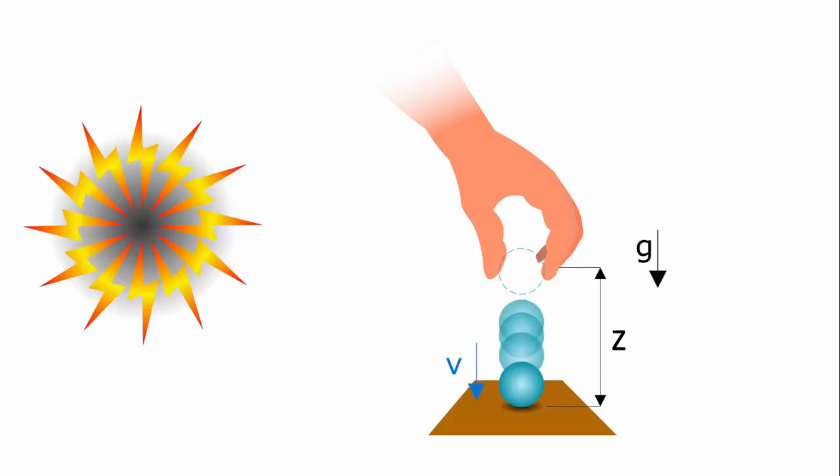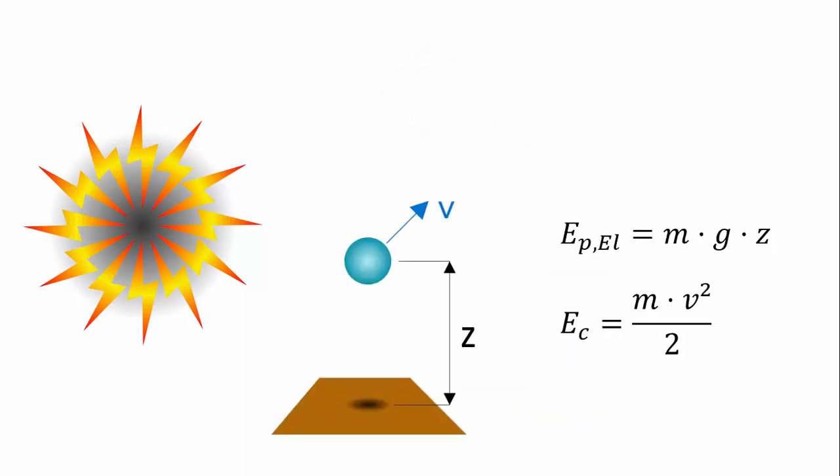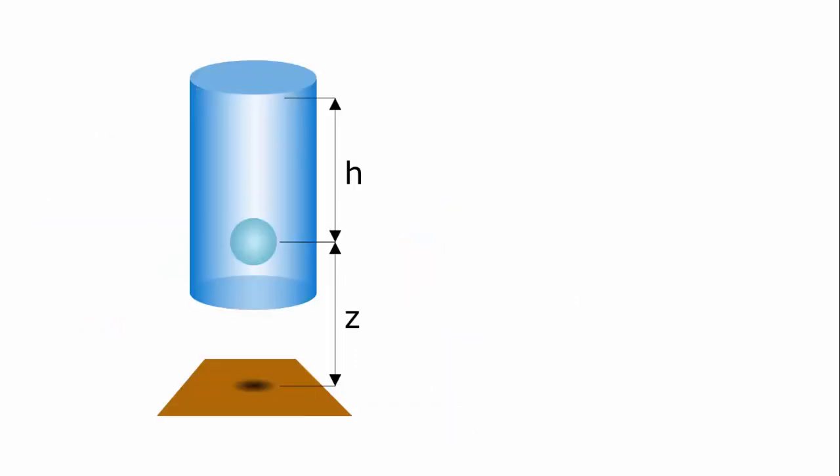If we release the water particle, it will go down and convert the potential energy that it had before into kinetic energy. So, the water particle will have two forms of energy: potential energy, that we will call elevation potential energy, and kinetic energy. We know from physics that its value is m v squared over 2.